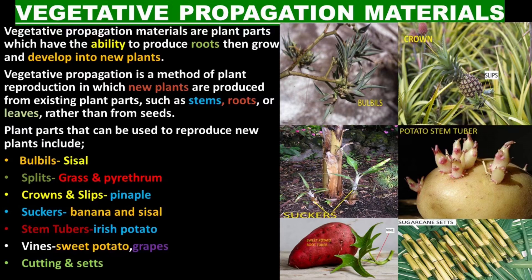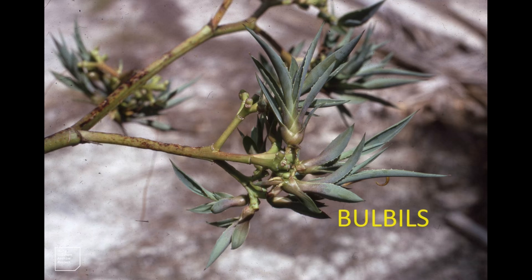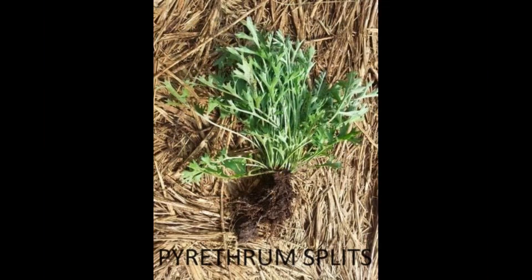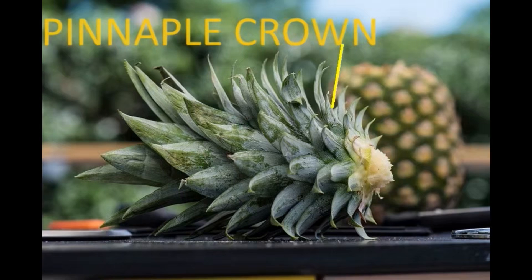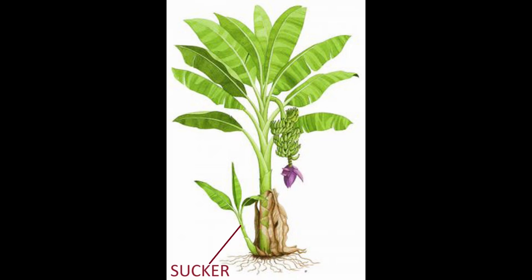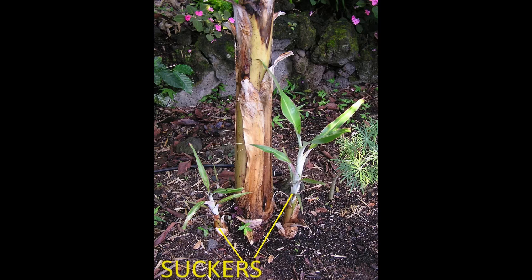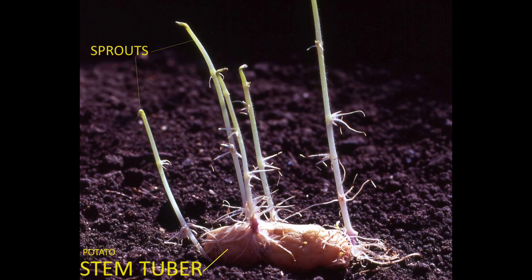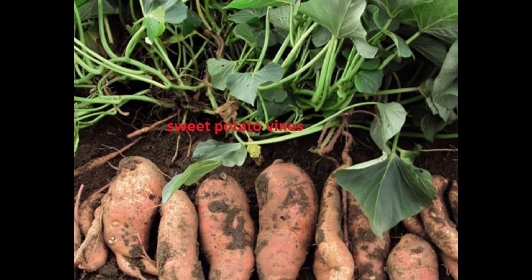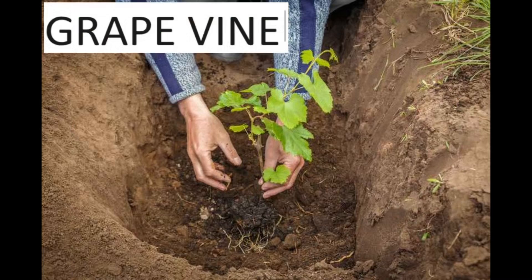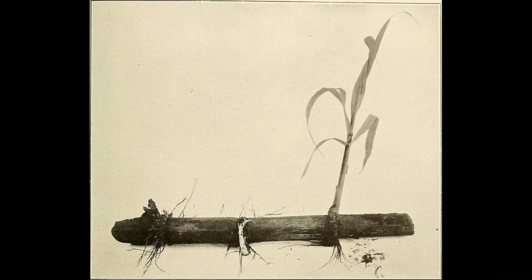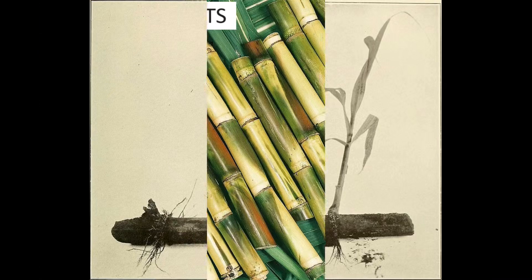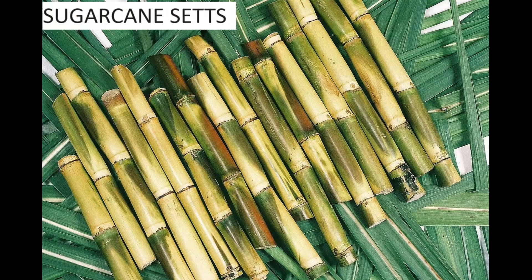Plant parts that can be used to reproduce new plants include: bulbals for sisal; splits for grass and pyrethrum; crowns and slips for pineapple; suckers for banana, apple, and sisal; stem tubers for Irish potato; vines for sweet potato and grapes; and cuttings and sets for tea, napier grass, cassava, and sugarcane.